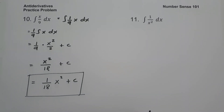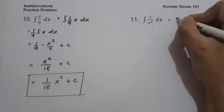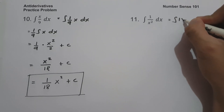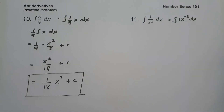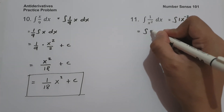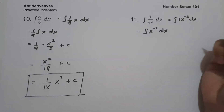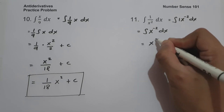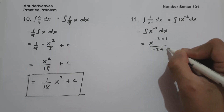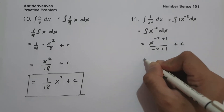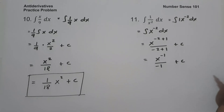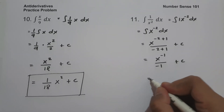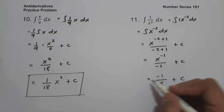On number 11, what is the antiderivative of 1 over x squared dx? Let us rewrite this as the integral of x raised to negative 2 dx, since moving x squared to the numerator gives us x raised to negative 2. So this will be x raised to negative 2 plus 1 over negative 2 plus 1 plus c, which is x raised to negative 1 over negative 1 plus c. To eliminate the negative exponent, this will be negative 1 over x plus c.